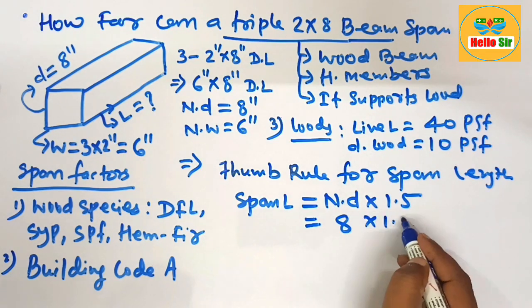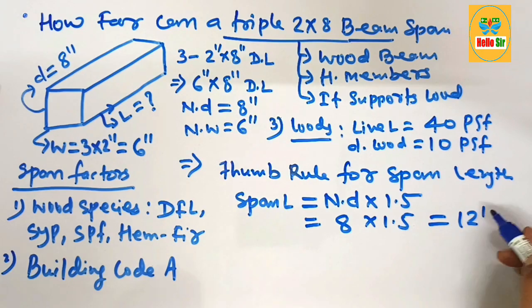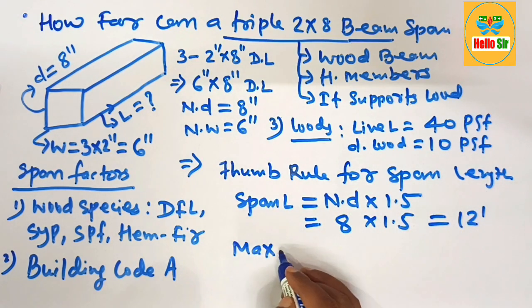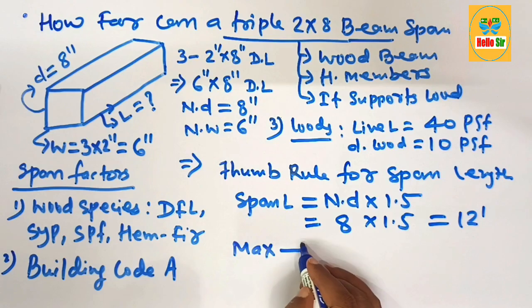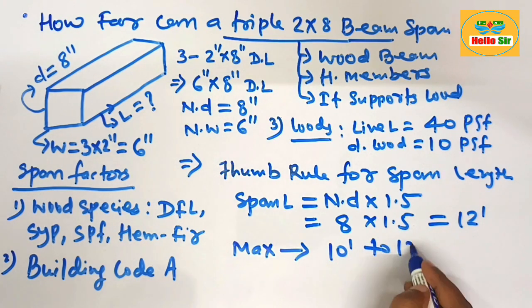This equals about 12 feet. It means a triple ply 2x8 beam span range is between 10 feet to 12 feet maximum distance.